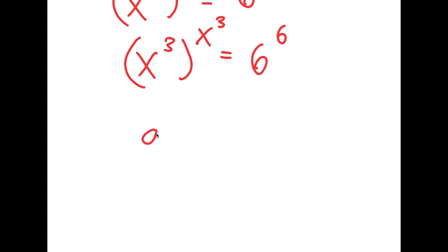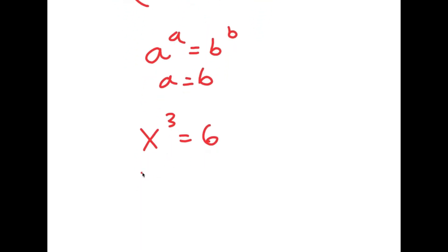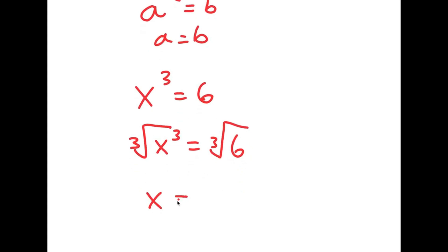Now, if I have something in the form a to the power of a equals b to the power of b, this means that a is equal to b. So in this case, x to the power of 3 is equal to 6. Taking the cube root on both sides, I get x is equal to the cube root of 6.